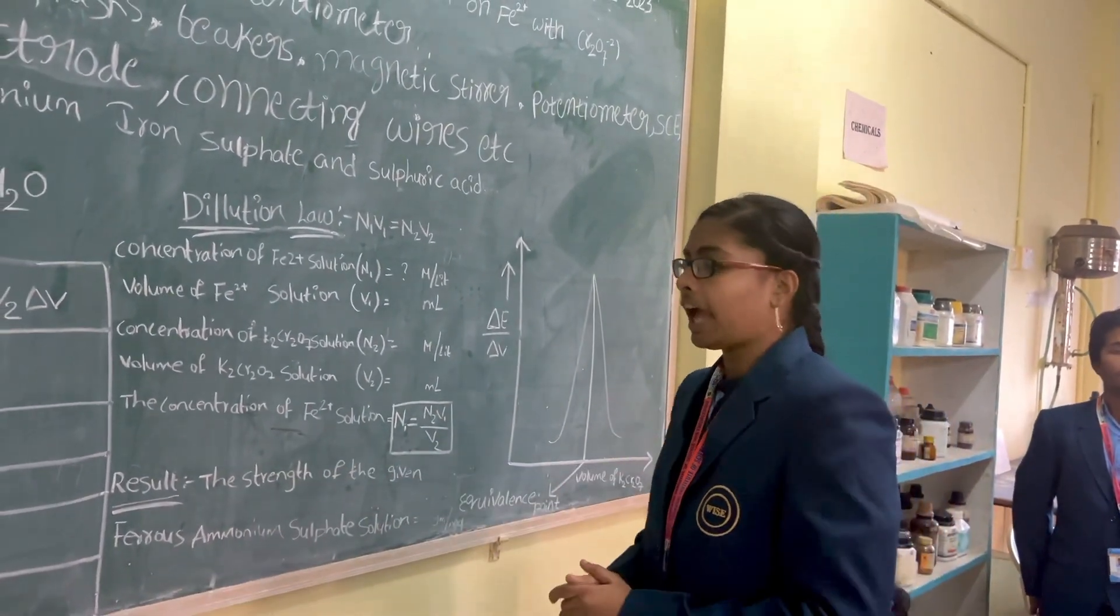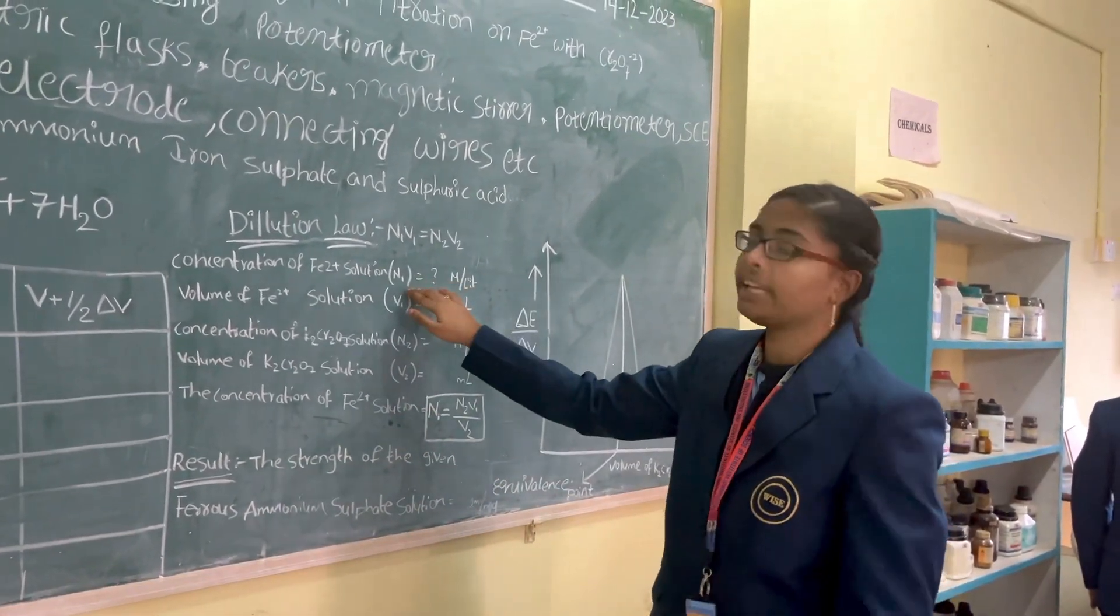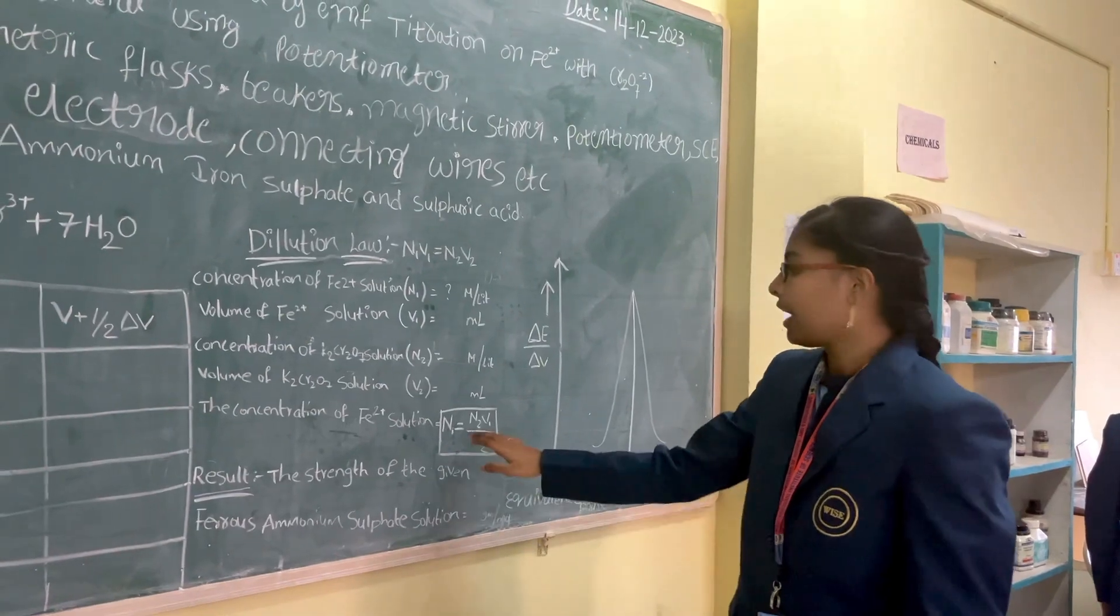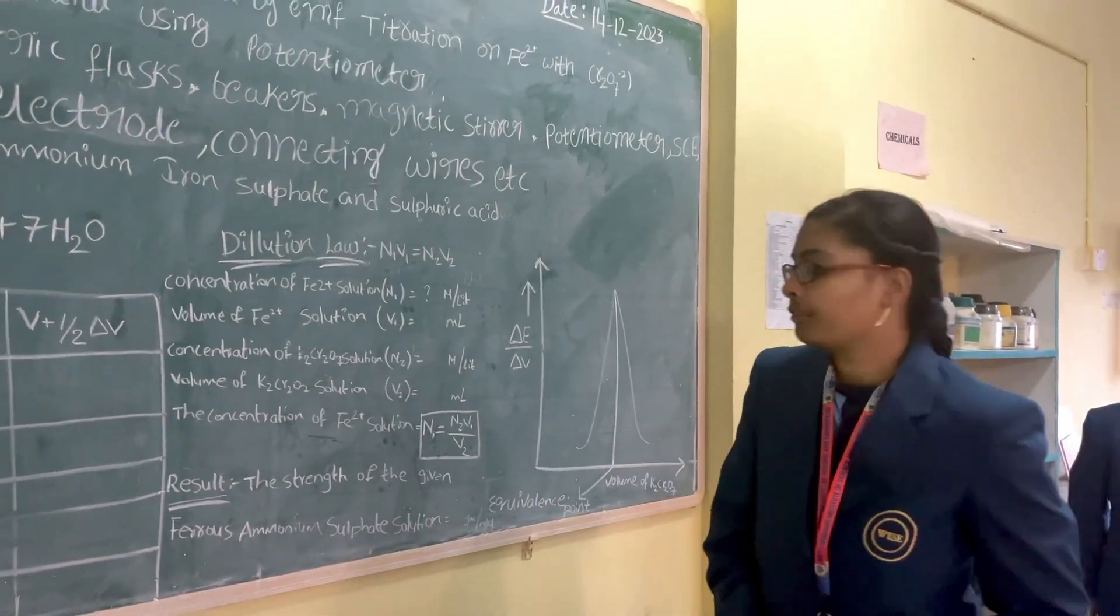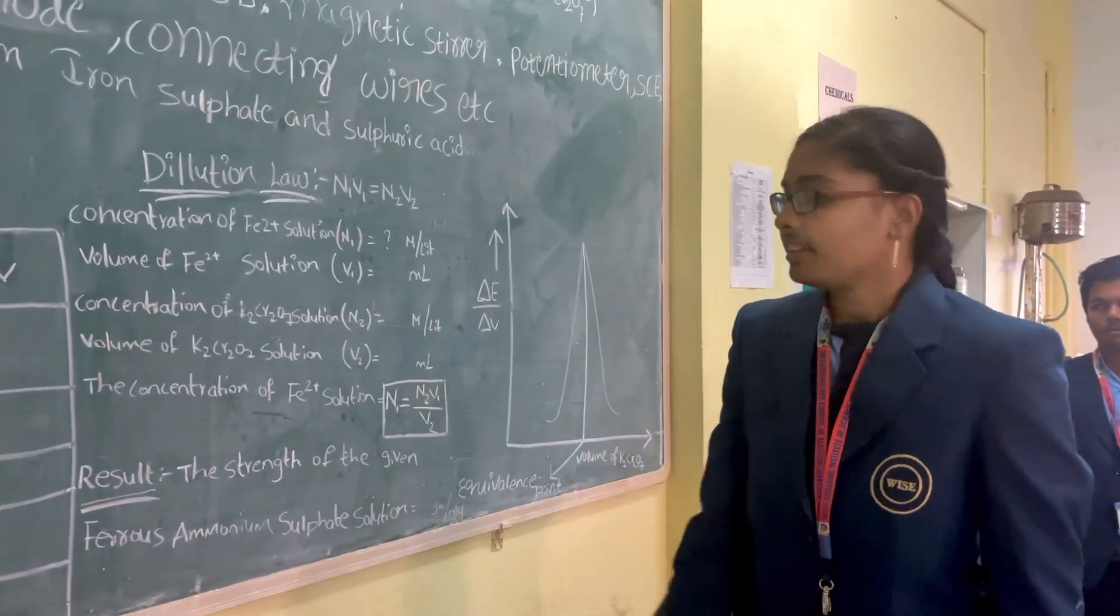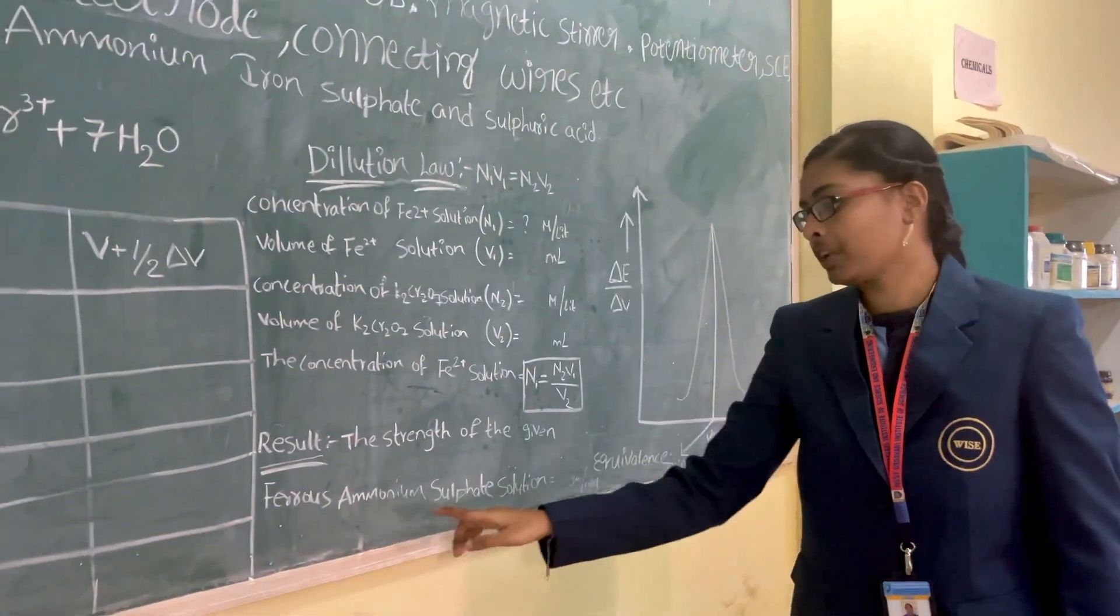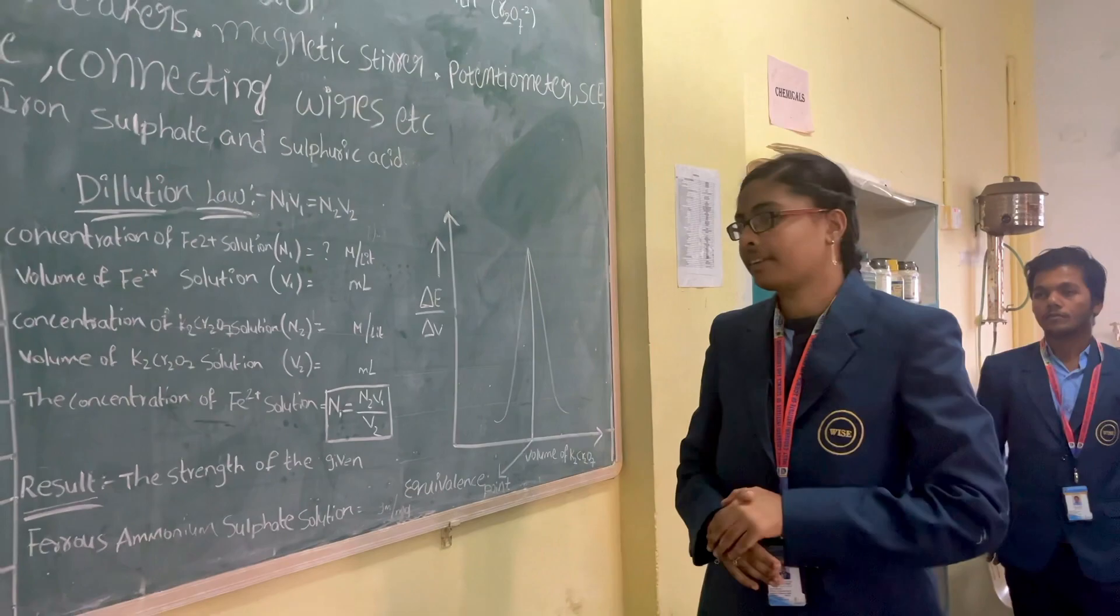We can calculate the concentration of Fe2+ solution by finding the N1 value. N1 equals N2V2 by V1. Then we can calculate the value, and the ferrous ammonium sulfate solution values we get.